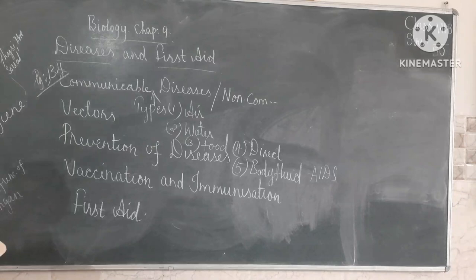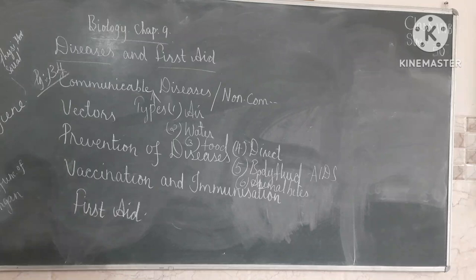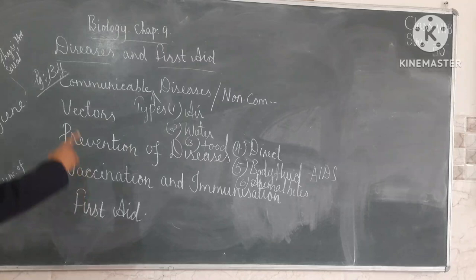The last type is animal bites. Diseases are caused through the bite of an infected animal. The best example of animal bite disease is rabies. This concludes the topics of today's class.